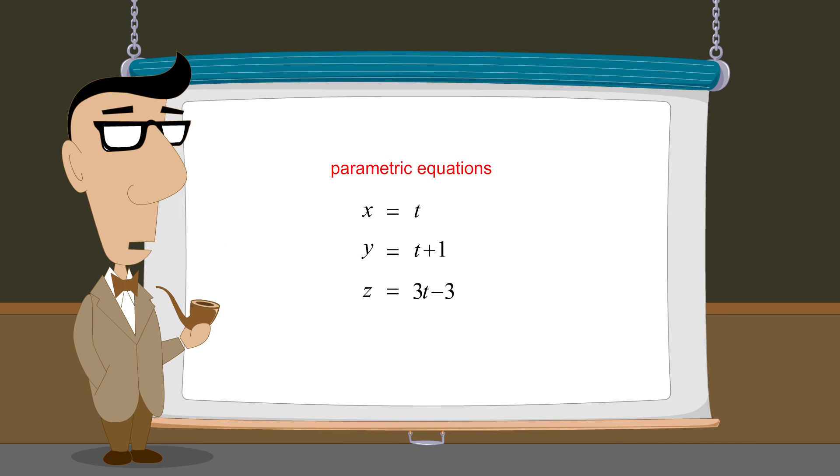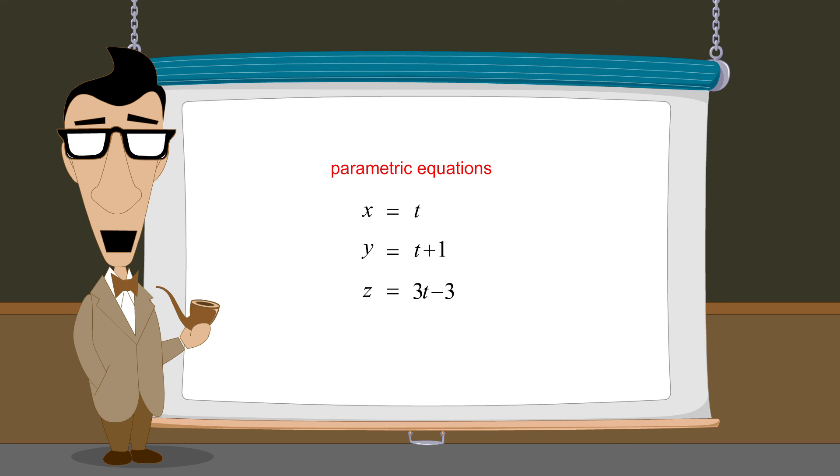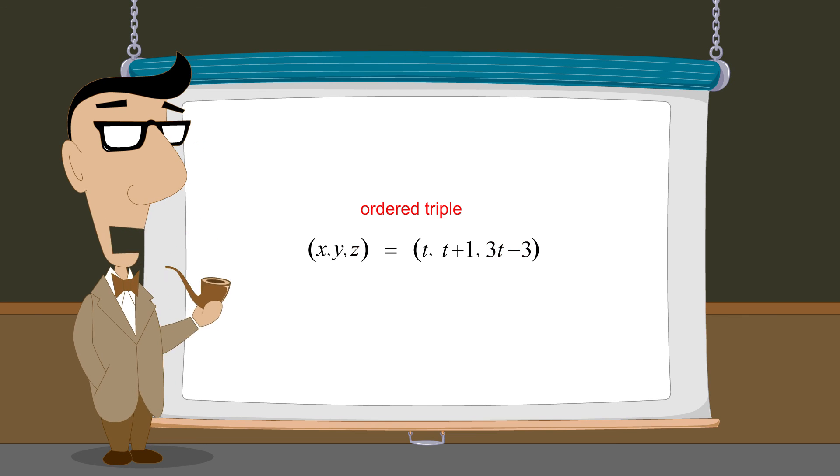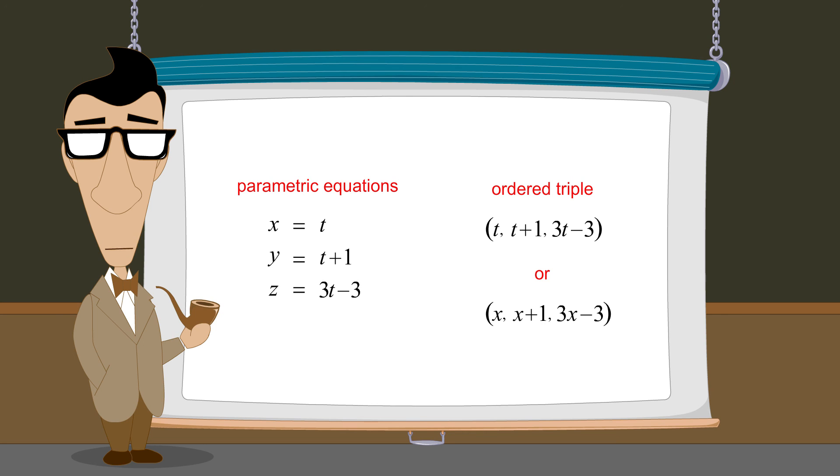So a solution set corresponding to a line in three-dimensional space can be described using three parametric equations. Or it can be represented as an ordered triple where the values of x, y, and z are each expressed as functions of a parameter. It is also possible to use one of the variables as the parameter, expressing the coordinate values in terms of this one variable. These are all examples of ways to write parametric representations of the solutions to a system of equations with infinitely many solutions.